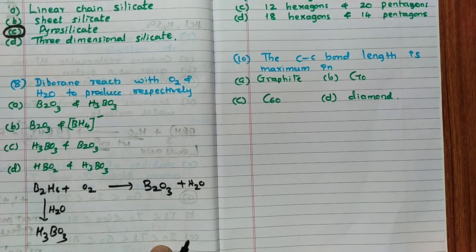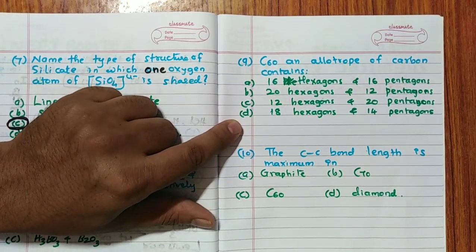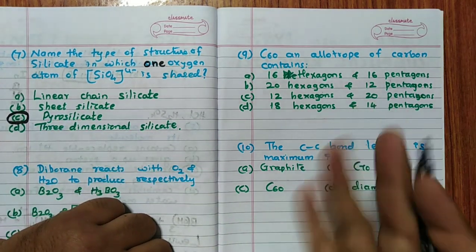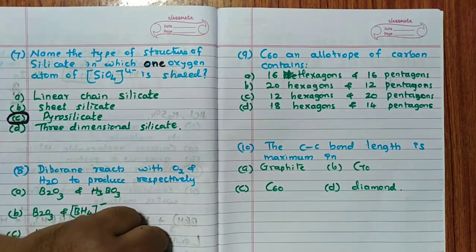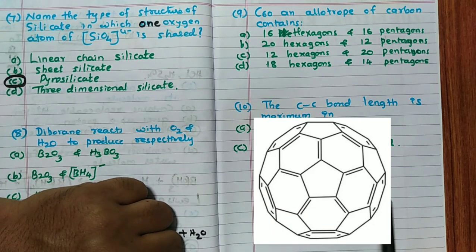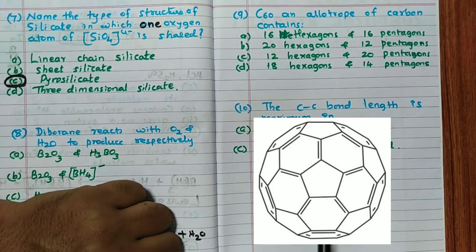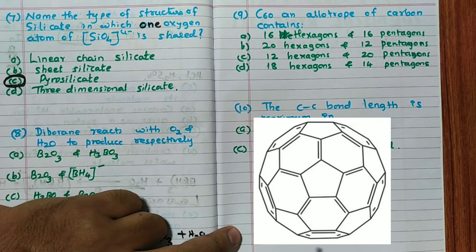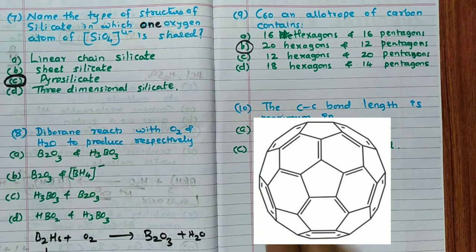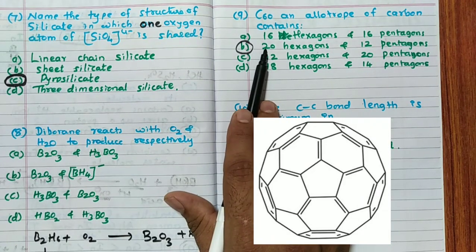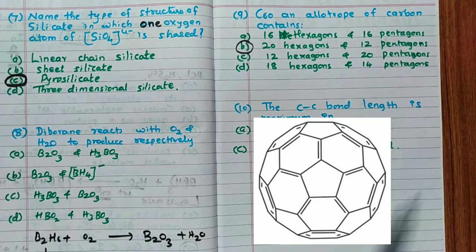The ninth question: C60, an allotrope of carbon (fullerene), contains how many hexagonal and pentagonal rings? In the C60 fullerene structure, there are 20 hexagonal rings and 12 pentagonal rings. A useful memory aid: hexagonal (six-membered) rings are more in number — 20; pentagonal (five-membered) rings are 12.